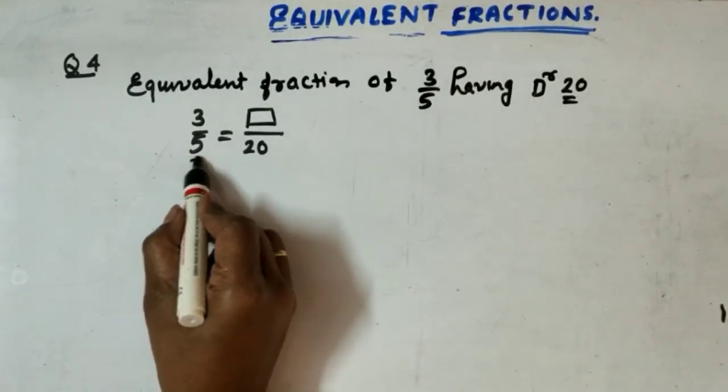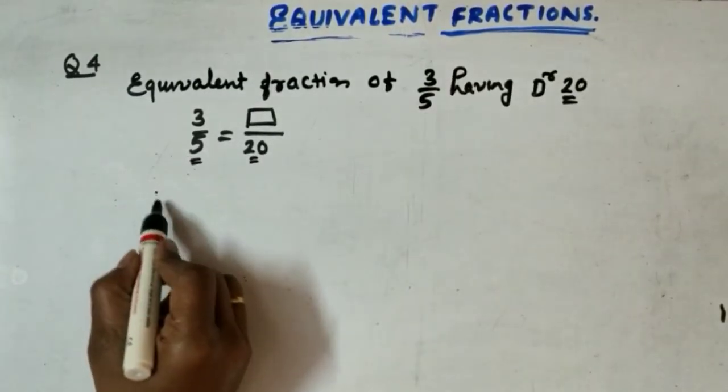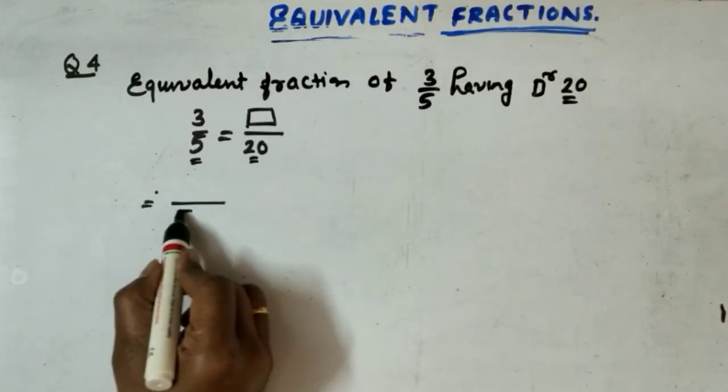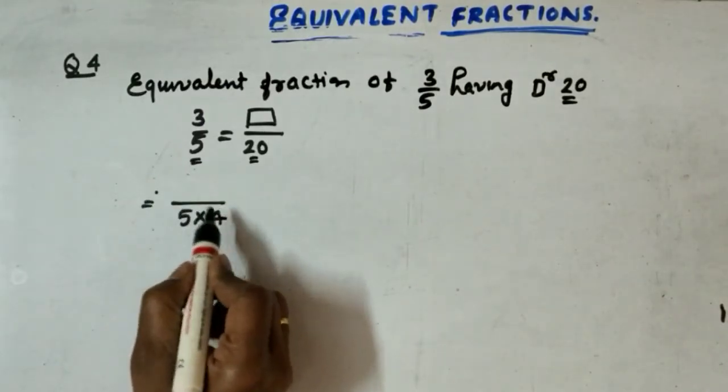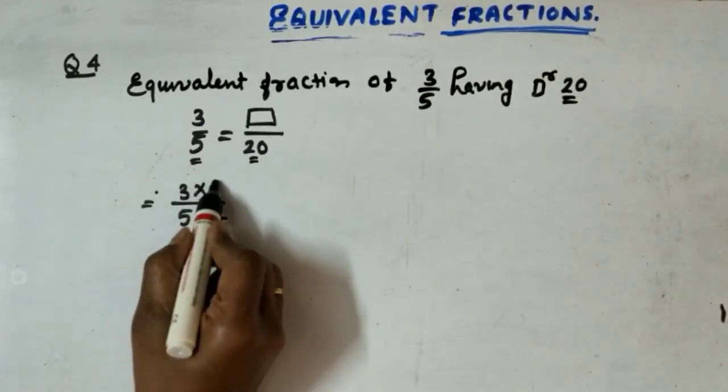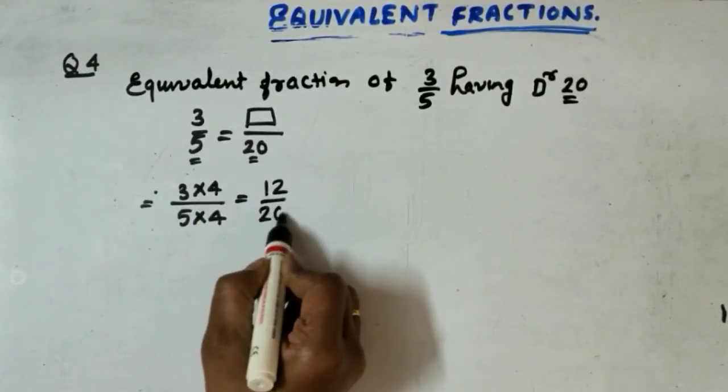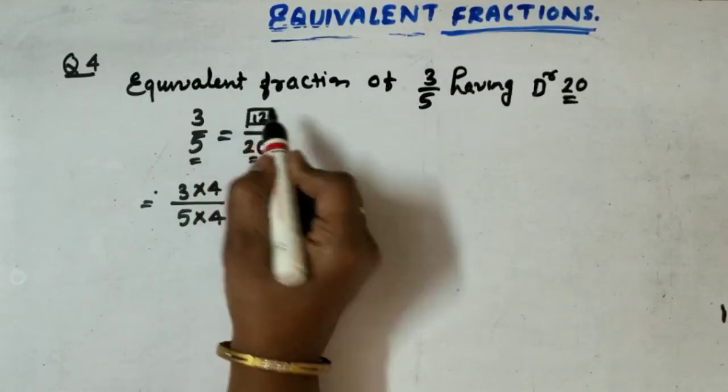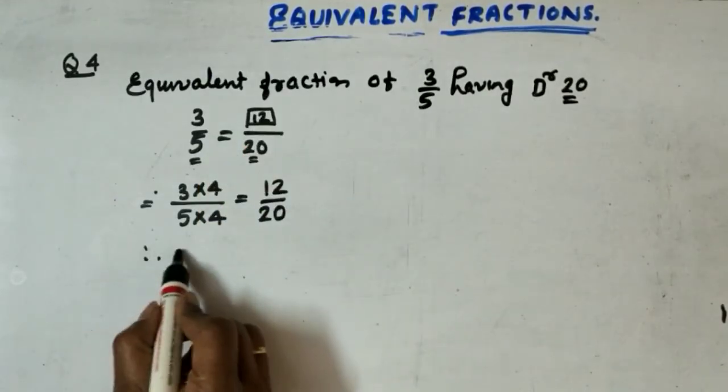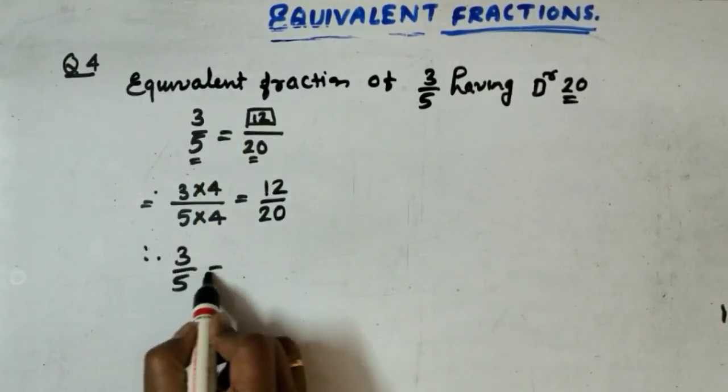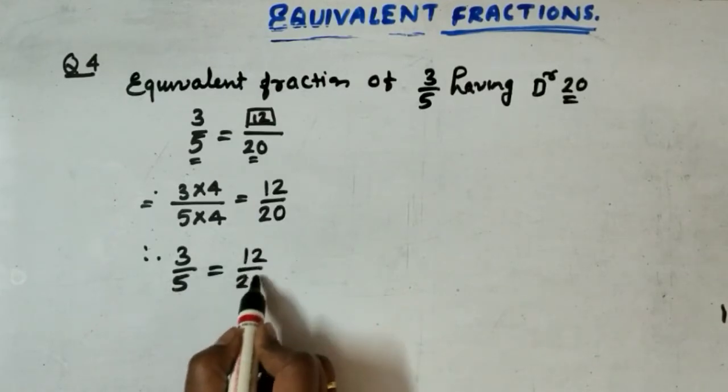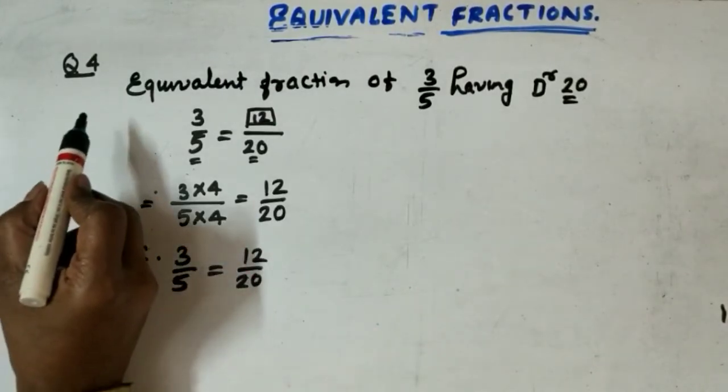The same way how we have solved question number 3, you have to see what relation is there between 5 and 20. So 5, 4's are 20. So do here 3, 4's are. As we know 3, 4's are 12, 5, 4's are 20. The answer is 12. Therefore, 3 by 5 is equal to 12 by 20.